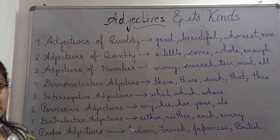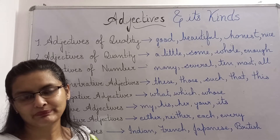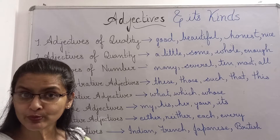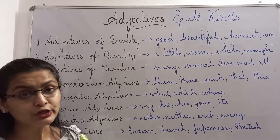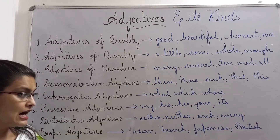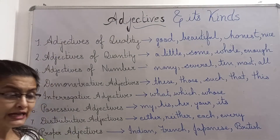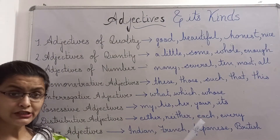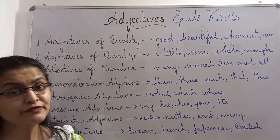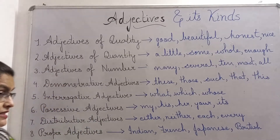Distributive adjectives are normally used with singular nouns. They are used for referring to members of a group, but individually. For example: either, neither, each, every. Either child, neither child, each child, every child. Here, they are speaking of members of a group, but speaking of them individually.